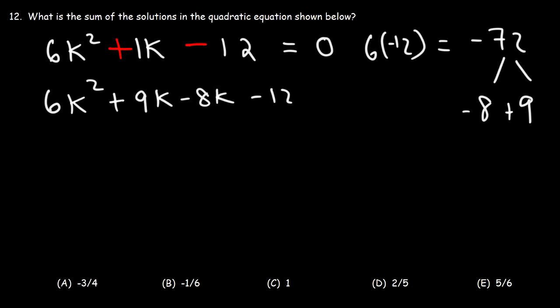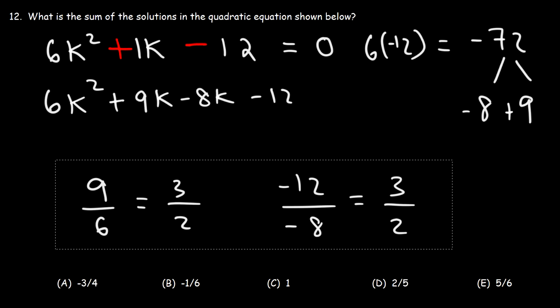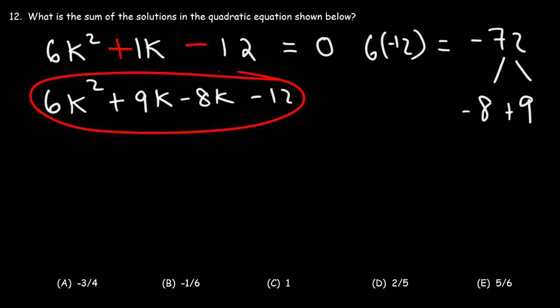Our next step is to factor by grouping. Notice that the ratio of the first two coefficients is the same as the ratio of the last two coefficients. If you simplify 9 over 6 you get 3 over 2, and negative 12 over negative 8 also gives 3 over 2. When you see that, it means you can factor a polynomial with four terms by grouping.